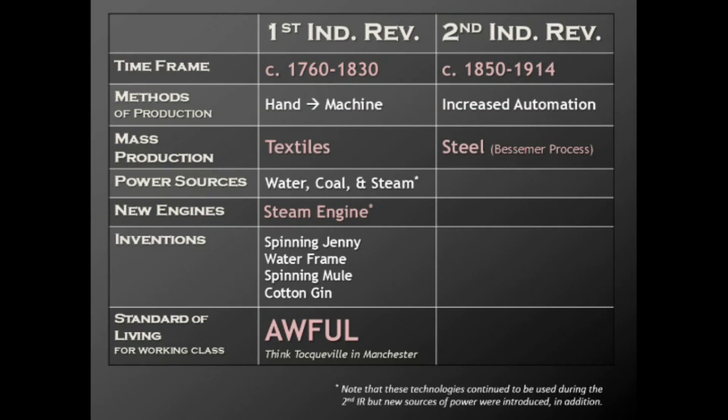Steel had been produced ever since the Middle Ages — you could have yourself a nice steel sword — but mass-producing steel to where you can lay miles and miles of railroad track is something unique to the second Industrial Revolution. In the United States, Andrew Carnegie is associated with the mass production of steel more than anyone else.